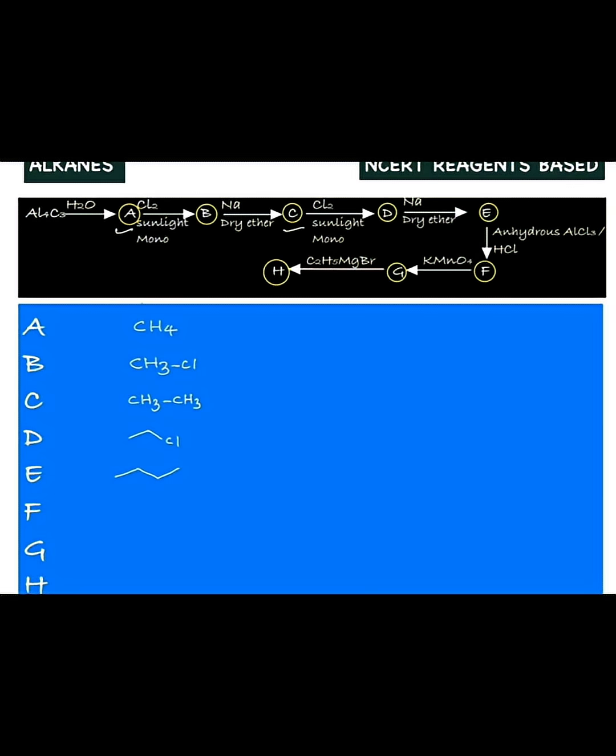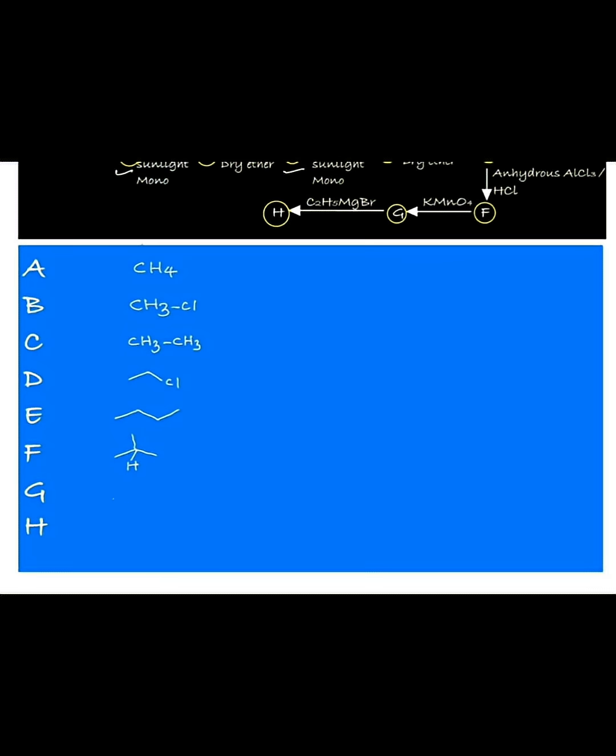E to F, you are using anhydrous AlCl3-HCl that is used for isomerization. N-butane will be converted to isobutane. Observe here, alkanes with tertiary hydrogen undergo oxidation with KMnO4 and that gives alcohol. As a result, the product will be tertiary butyl alcohol.